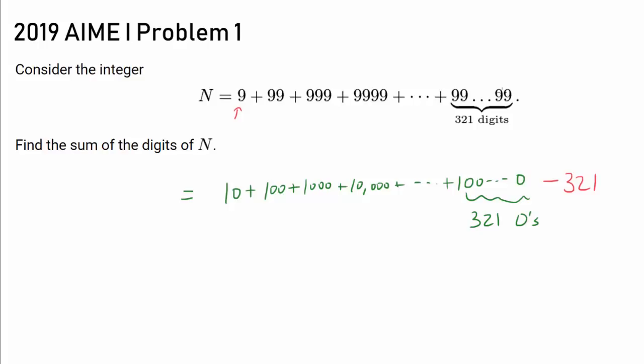And since we're starting with one 9 and going to 321 nines, we want to take away 321. And obviously, this is much easier to add. That is going to be a bunch of ones followed by a 0, because the 10 is the smallest we have.